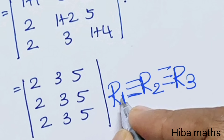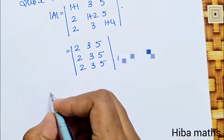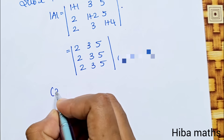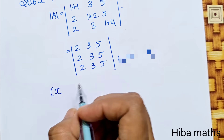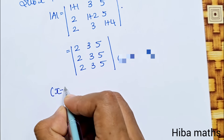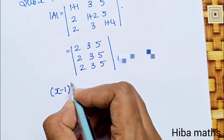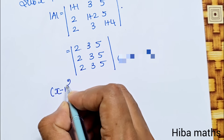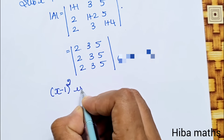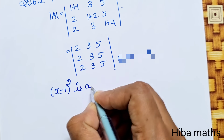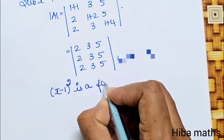Two rows are identical, so the determinant value is 0. Therefore, (x-1) is a factor of the determinant.